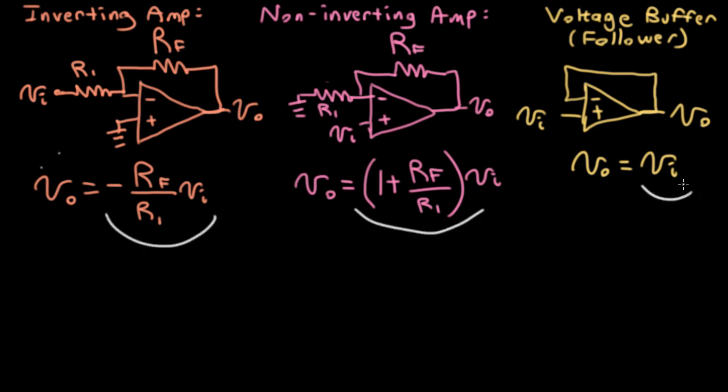The main thing to remember is that the feedback resistor goes on top. And the way to think about that is to think about the effect of negative feedback.